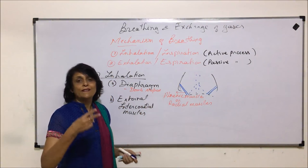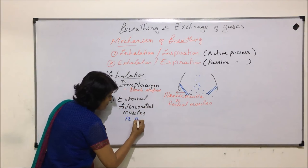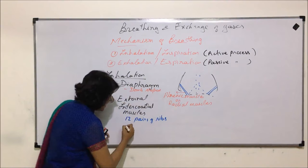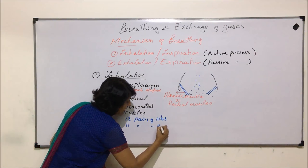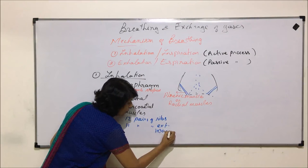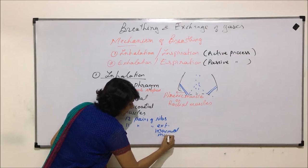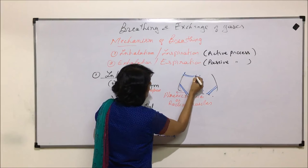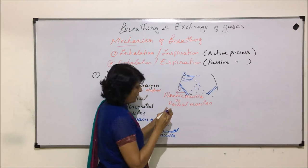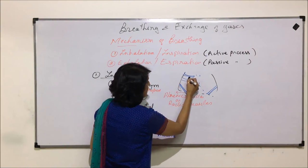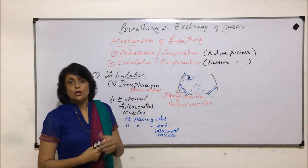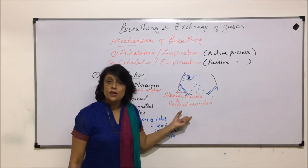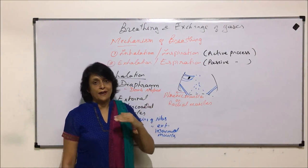Intercostal muscles are present between the ribs. We have 12 pairs of ribs, and between these 12 pairs of ribs there are 11 pairs of external intercostal muscles. These muscles attached to the diaphragm are the radial or phrenic muscles.